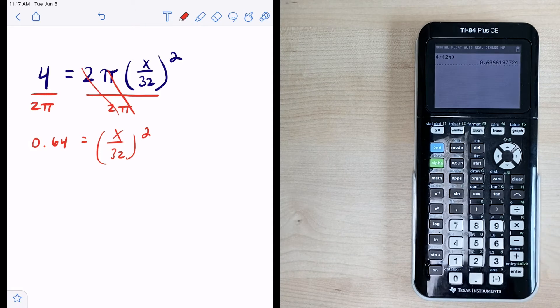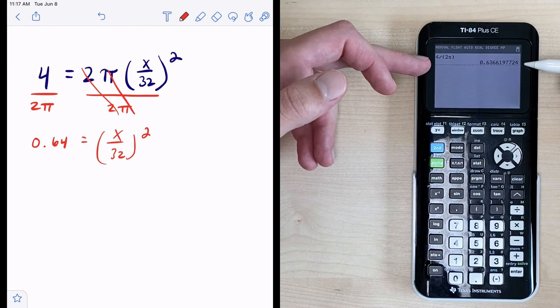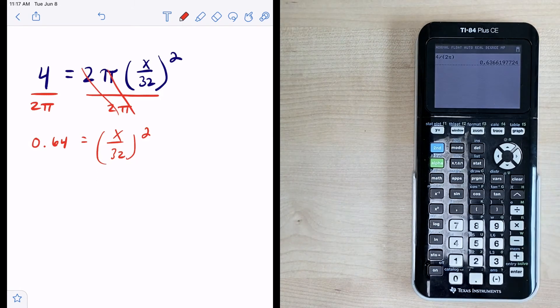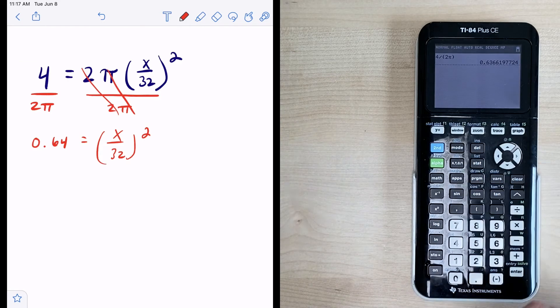Now I am just rounding this decimal for my work purposes but I want to keep my non-rounded decimal in my calculator because that's going to give me my exact answer or as close to exact as we can get it without rounding too early.